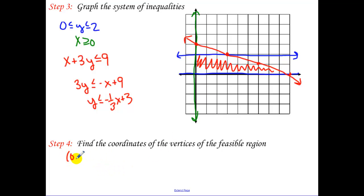So find the coordinates. Zero, zero is always going to be a coordinate. We have this point up there, which is zero, two. We had the point that was three, two. And then we have this x-intercept over here, which is nine, zero.